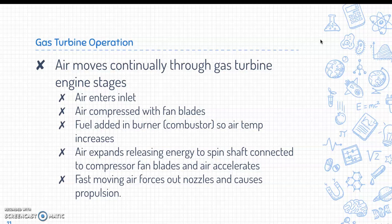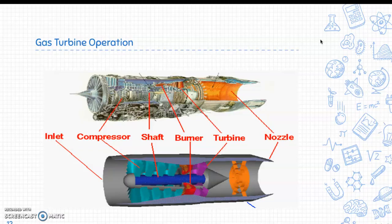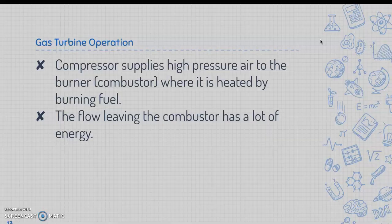The fast-moving air forces out of the nozzle and causes propulsion. A diagram demonstrates the different areas: air begins at the inlet, then travels into the compressor, the shaft moves, then we have the burner, turbine, and lastly air exits out the nozzle.